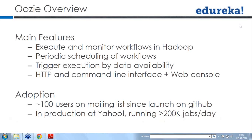You can also trigger execution by data availability. For example, using a polling approach — a daemon process which is continuously running — it will look at a particular folder to see if a new file is coming in. You can poll that every 5 minutes, 10 minutes, or every minute, depending on your required check interval. You can do that directly with Oozie.